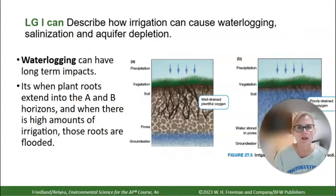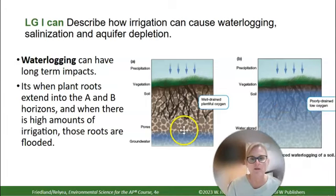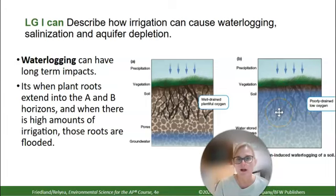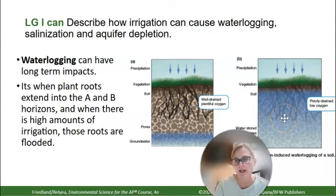Water logging is when water covers the roots of plants. This can cause root rot, where roots are decomposed by bacteria. It also prevents gas exchange, so plant roots cannot take in carbon dioxide or release oxygen properly.